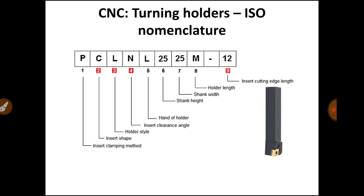Here on the screen you can see a turning holder. The portion in black color is the turning holder, and the portion in golden color is a cutting insert that is clamped over the turning holder. Here you can see the standard designation of turning holder: PCLNL25M-12. This is a standard designation, and there may be different designations for different holders.